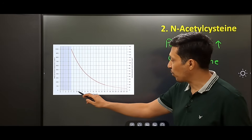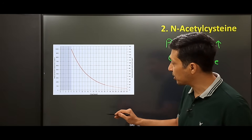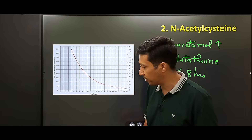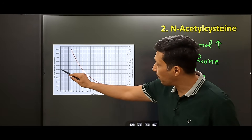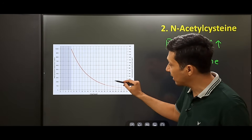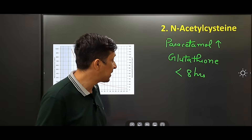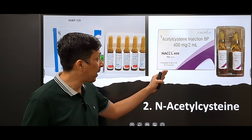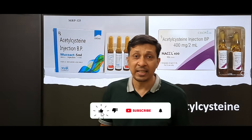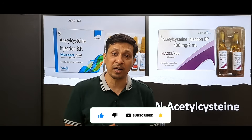On the x-axis of the nomogram is the number of hours after ingestion, and on the y-axis is the blood paracetamol concentration. If the blood paracetamol concentration at a given hour is above the red line, we should immediately start treatment. N-acetylcysteine is available as a 2 ml or 5 ml ampoule, each containing 200 mg of drug per ml.